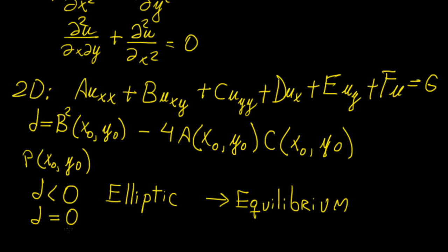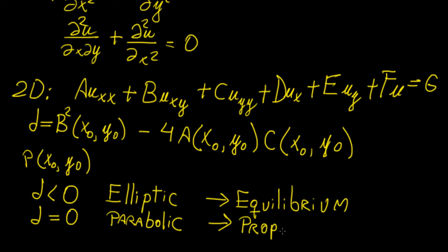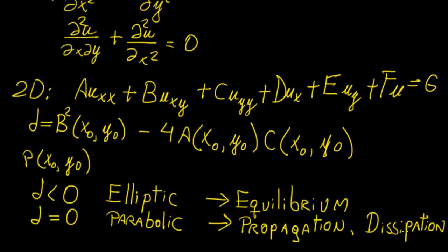The second case is when the discriminant equals zero, and then we call it a parabolic PDE. This usually relates to problems involving propagation of some source or wave propagation, and it is also tied in with dissipation problems — something like heat dissipating through a specific medium.